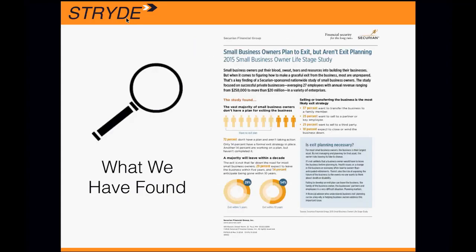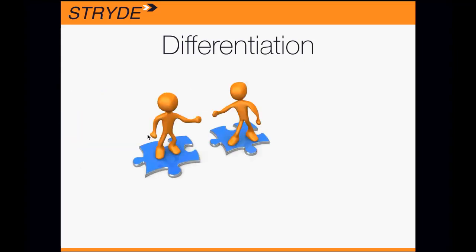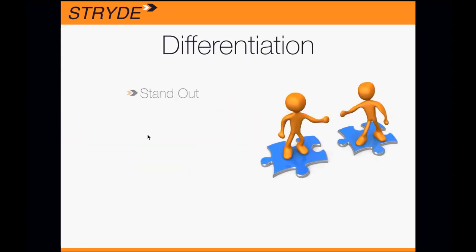Here's a study on the 12 trillion dollar market: 54% of the 28 million businesses expect to change hands in the next handful of years, with another 10% that don't expect to change hands but will due to economic shift, unexpected health issues, or loss of a key person. 72% have no exit strategy, another 14% started but didn't finish — meaning 86% are not prepared for the transition.